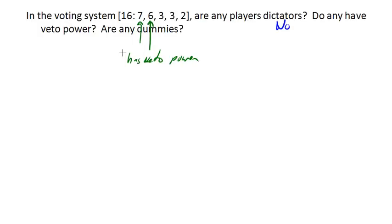So now, to look at dummies. A dummy is a player whose vote is never essential for a group, or sometimes called a coalition, to reach quota.